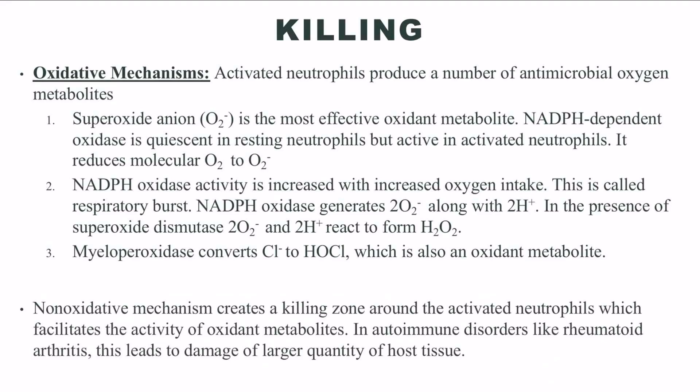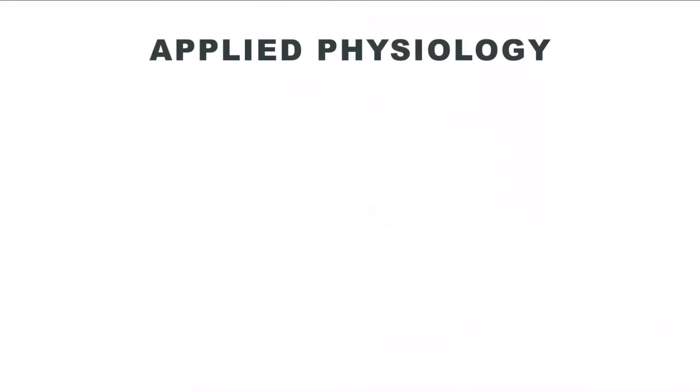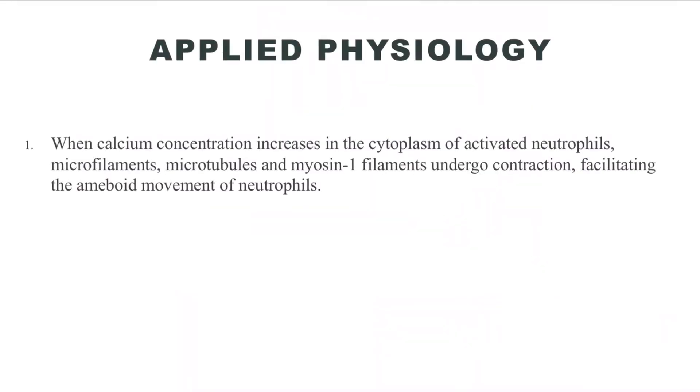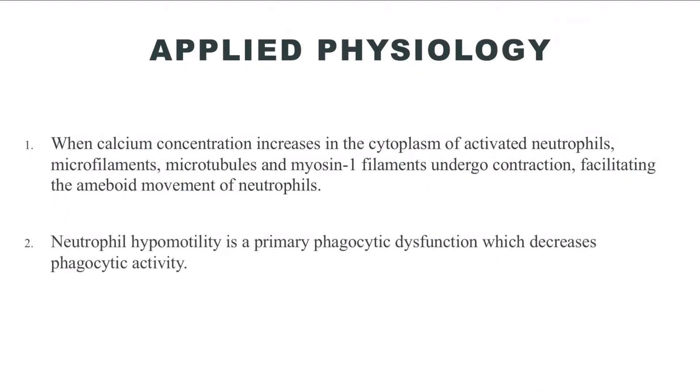Sometimes this coordination becomes detrimental, leading to damage of more host tissue in conditions like rheumatoid arthritis. The applied aspects of phagocytosis revolve around the movement of phagocytic cells. The activation of neutrophils increases cytosolic calcium concentration, which leads to contraction of the components of the cytoskeleton, increasing amoeboid movement of neutrophils. Phagocytic activity is decreased in conditions like neutrophil hypomotility.